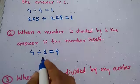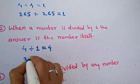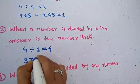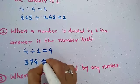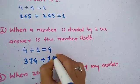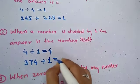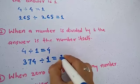Now next example: 374. No matter how large a number you take, if you divide it by 1, the answer is the number itself — 374.